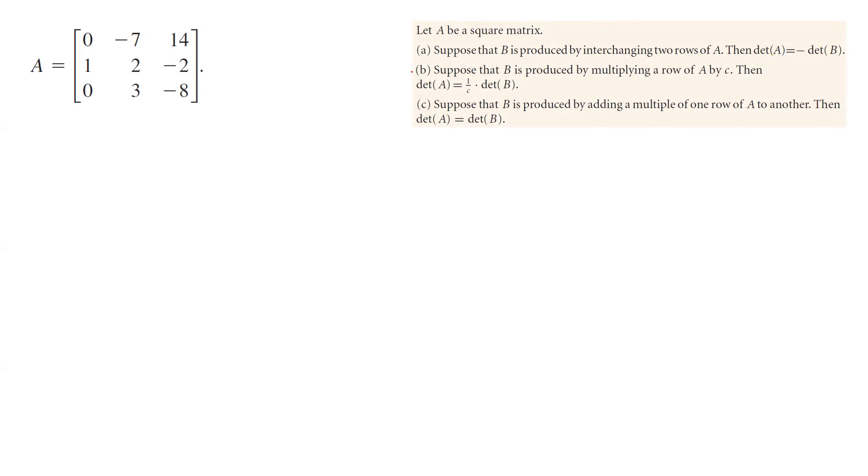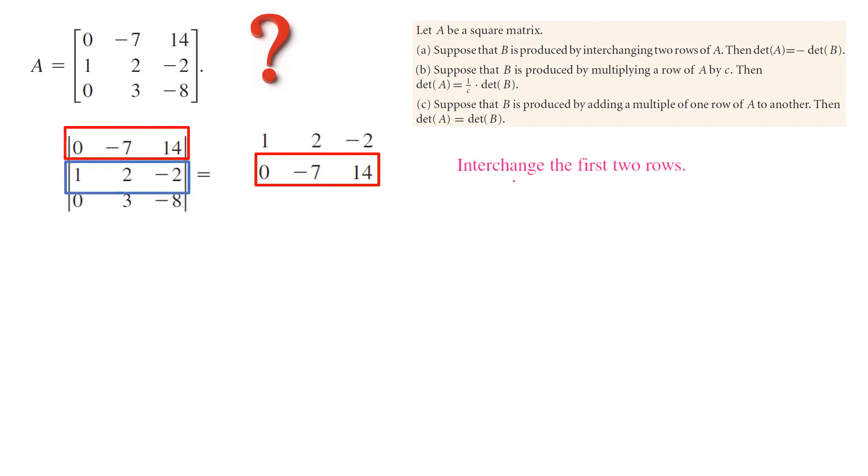So let us begin. First, we're going to interchange two rows of this matrix. We're going to interchange the first row and the second row. Why is that? Because the pivot is 0, it's not 1. This becomes your second row. And then your first row is 1, 2, and negative 2. Your third row stays the same. And since you interchange the two rows, the determinant of this new matrix is negative times the determinant of the first matrix.